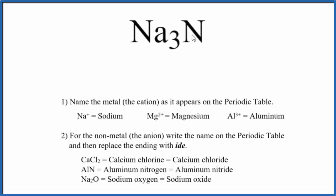To write the name for Na3N, we first have to realize what type of compound we have here. Sodium is a metal, nitrogen is a nonmetal, so this is an ionic compound.